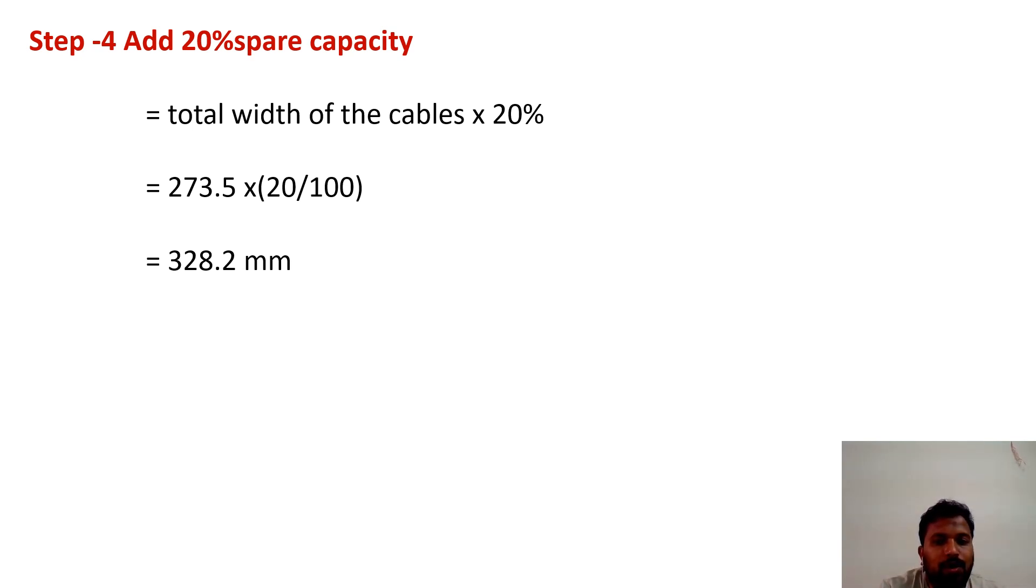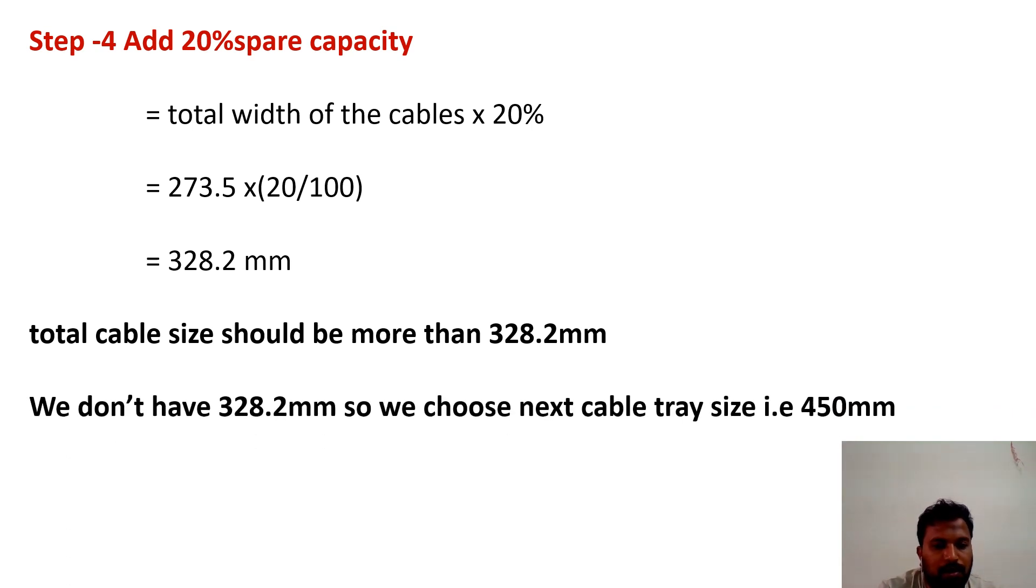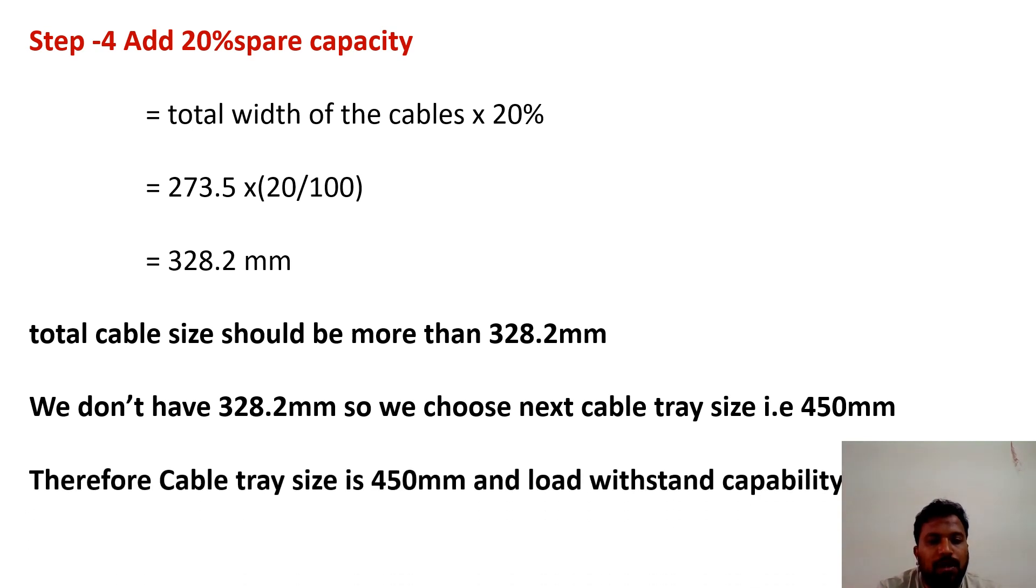Our cable tray should be more than 328.2mm. We don't have generally 328.2mm cable trays, so we are going for the next size. That is 450mm. Our cable tray should be 450mm and can withstand 18.28 kg per meter.